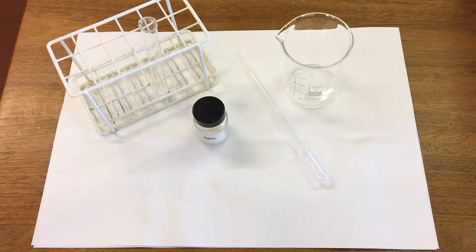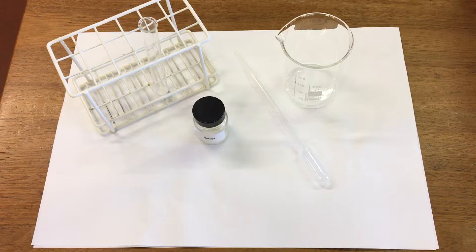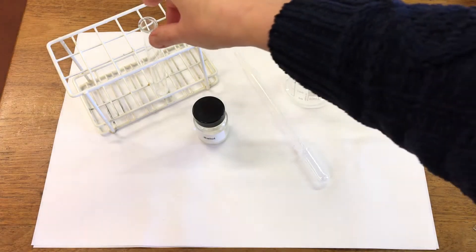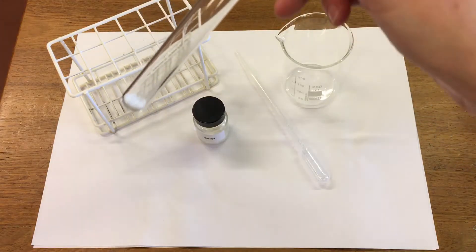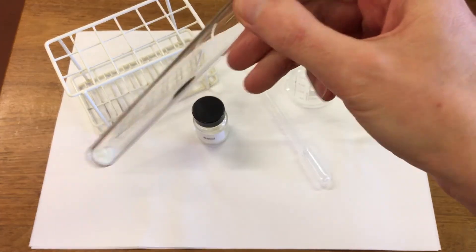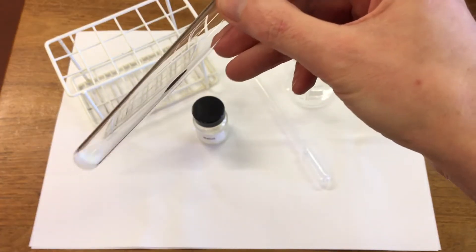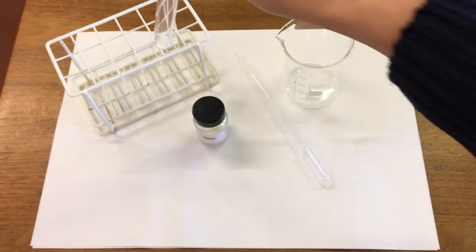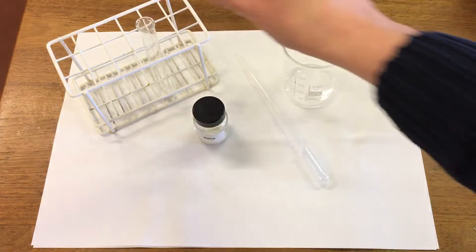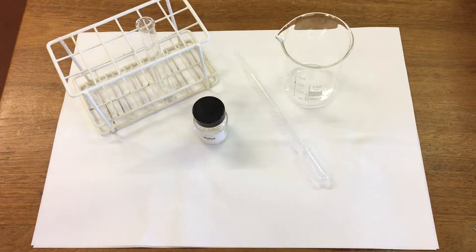In this experiment we're looking at changes of state. We're going to observe the white solid salol. We've got some of the salol in the test tube here so you can see it's solid. We're going to observe it at different temperatures and see if it changes state.